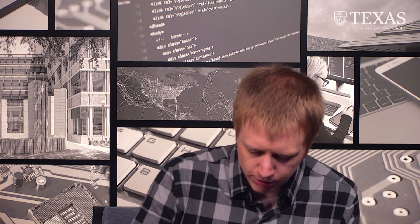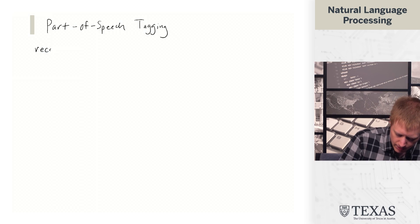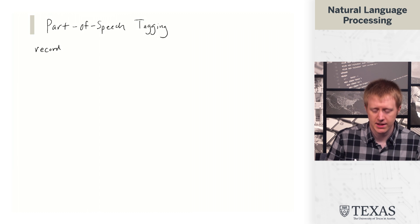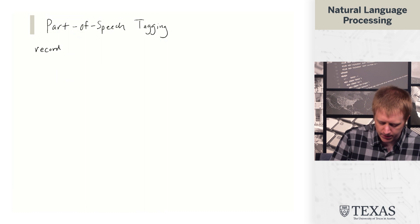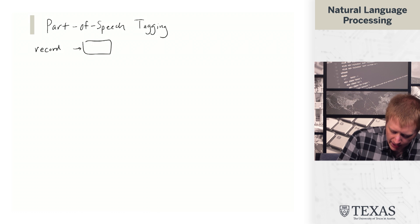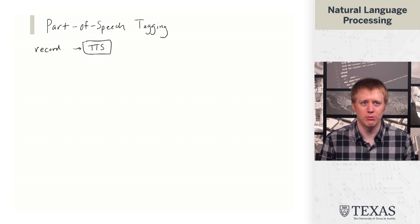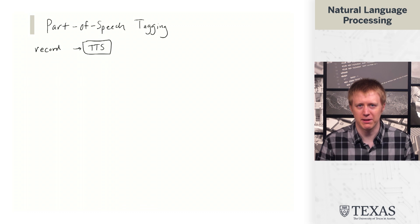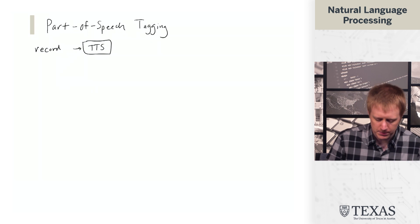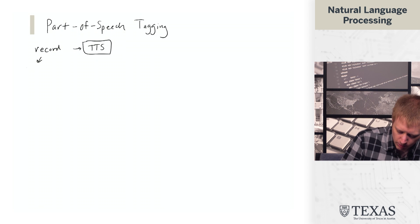The reason we might want to do this is the following. Let's say we have this word and we want to feed this into a TTS system. What should TTS say? There's two ways to pronounce this—it's either record or record. We can thank the English language for being weird in this regard. In order to determine this, we need to know whether this is a noun or a verb.